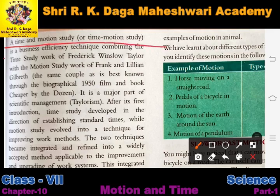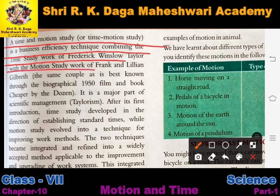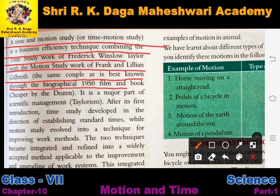A time and motion study is a business efficiency technique combining the time study work of Frederick Winslow Taylor with the motion study work of Frank and Lillian Gilbreth — the same couple best known through the biographical 1950 film and book 'Cheaper by the Dozen.'